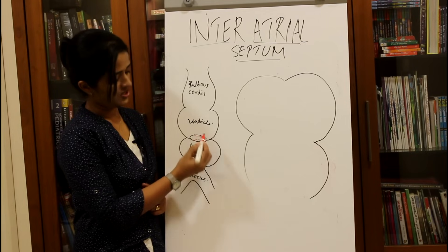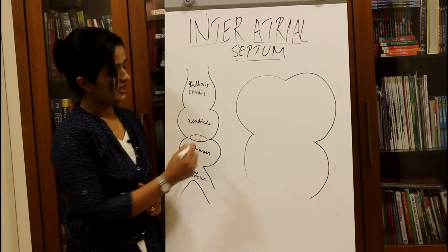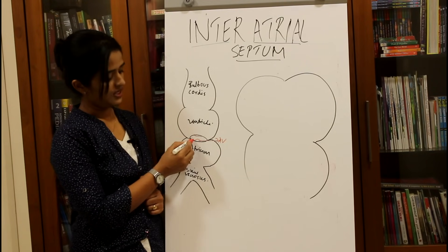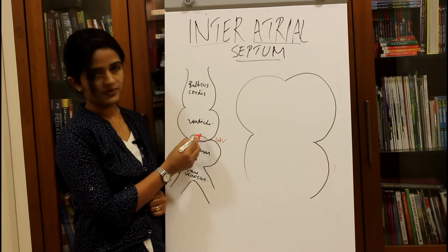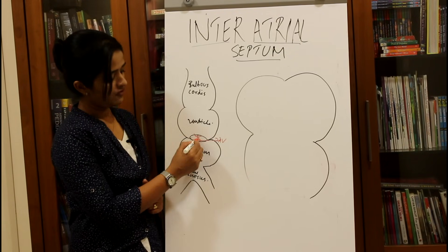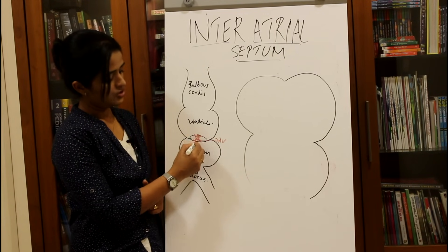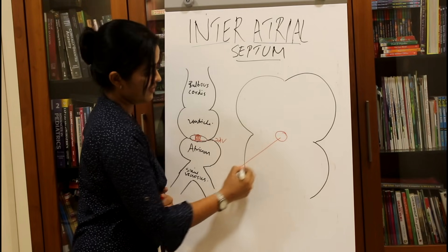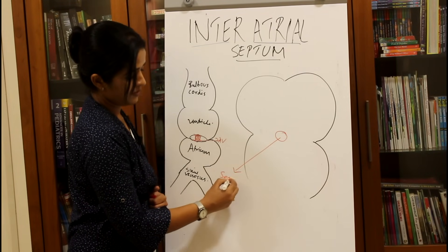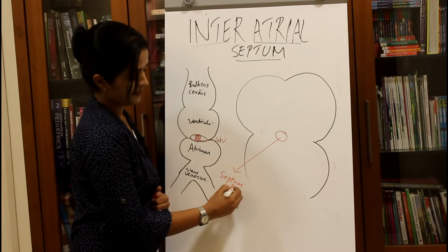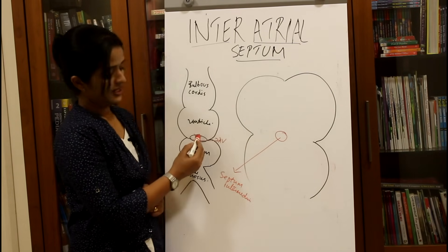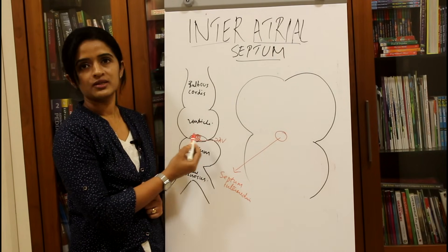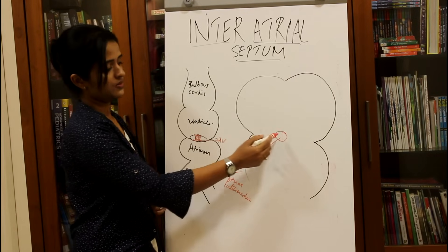In the atrioventricular canal, there is a formation of two cushions from the anterior and posterior aspect — they are called AV cushions, or atrioventricular cushions. They develop from the anterior and posterior aspect of the atrioventricular canal and fuse in the midline to form a septum called the septum intermedium. The septum intermedium divides the entire atrioventricular canal into a tract on the right side and a tract on the left side.